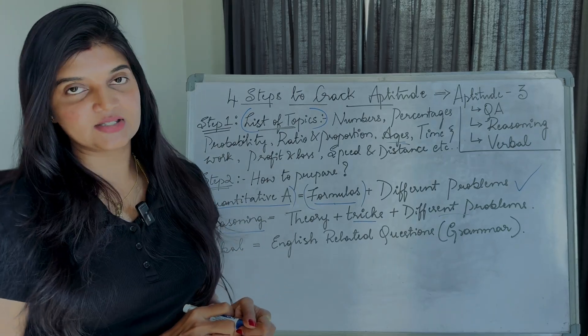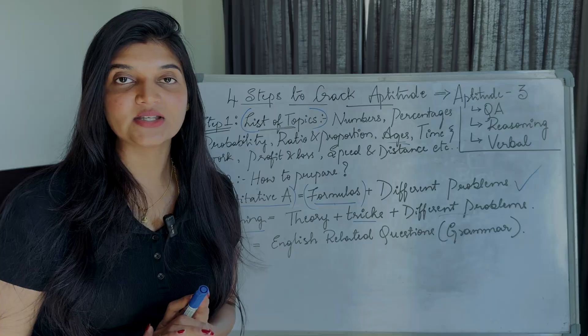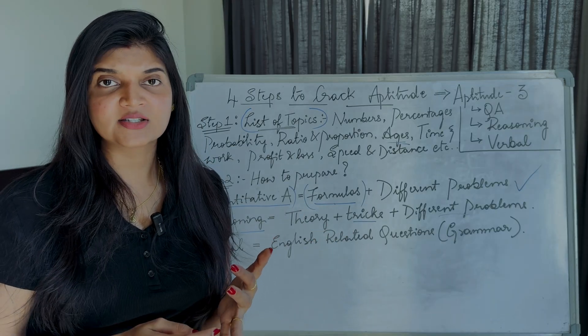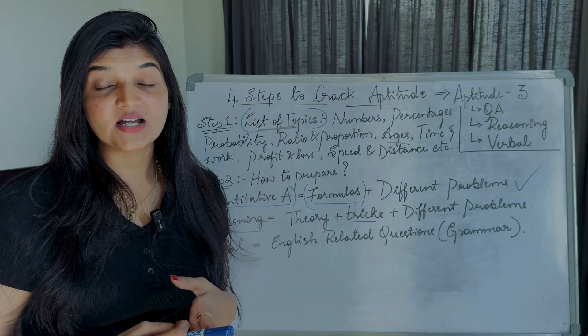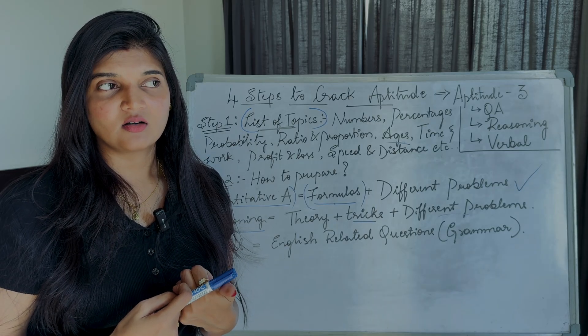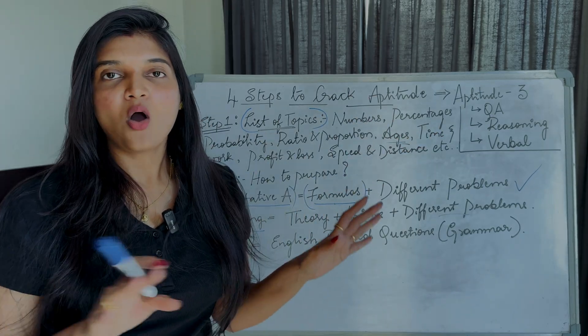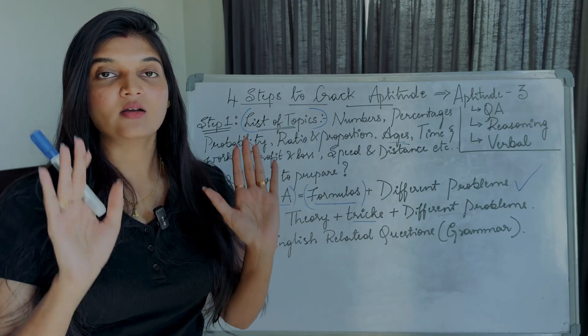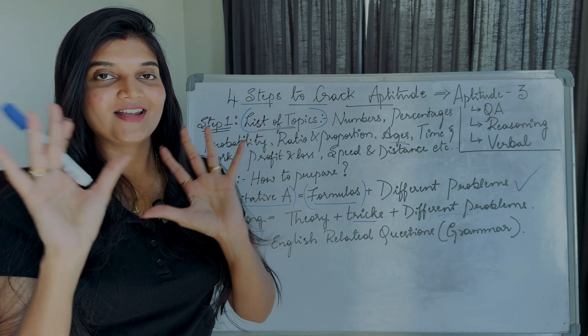So coming to the theory and tricks, what kind of topics comes under reasoning? Reasoning is nothing but like calendars, clocks, blood relations, cubes and dice, images and ages. All these kind of topics comes under reasoning.